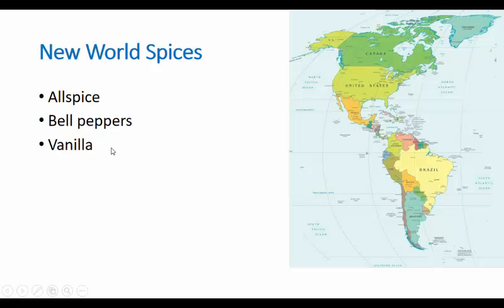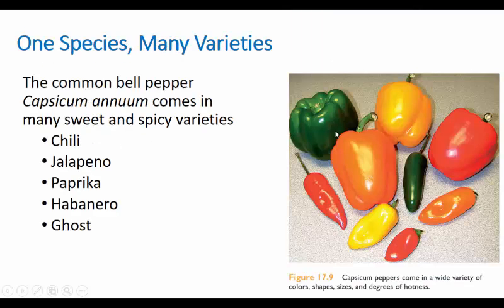The bell pepper — one of the spiciest things on the planet. I know you're thinking of green, orange, or red bell peppers, which are themselves not spicy — they're sweet. I like eating them for breakfast, just picking one up and taking a bite because it's sweet and not spicy. But capsaicin comes from this plant as well. Capsicum annuum is the same species that gives rise to chili, jalapeño, paprika, habanero, and ghost pepper. All of those peppers come from the same source.